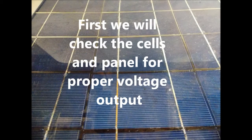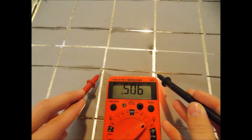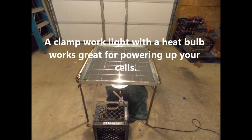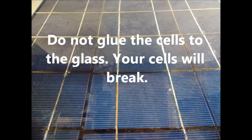The first step in encapsulating your cells is to assure that all cells are working properly. You will check that each cell produces 0.5 volts and that your panel as a whole has a voltage of 18 volts or greater. Next, you will glue the bus bars at the end of each cell row to the glass. Do not glue the cells themselves, as this will cause them to break once the panel is put into service.